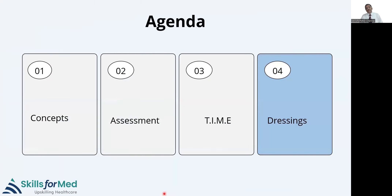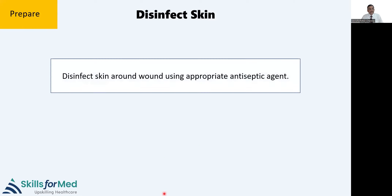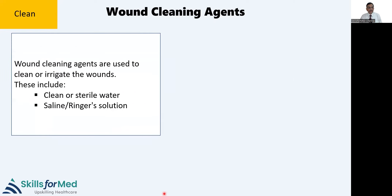With that knowledge, let's get into how to select a dressing and how to do dressings. Dressing a wound involves three basic steps: prepare, clean, and dress. In preparing, you disinfect the skin around the wound using appropriate antiseptic — mostly povidone-iodine, or chlorhexidine for those allergic to iodine — making sure betadine and other chemicals do not get into the wound itself. In cleaning, use irrigating agents to clean the wound.